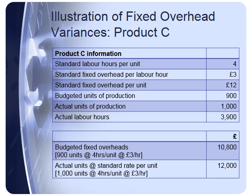The budgeted fixed overheads: we budgeted to make 900 units, each taking four hours, at a fixed overhead of £3 per labour hour. So 900 × 4 × £3 gives £10,800 as the original budgeted fixed overheads. We can also calculate actual units produced at the standard rate per unit: 1,000 units actually produced, each taking four hours, at £3 per hour, gives £12,000. Those figures will be used to help calculate the variances.